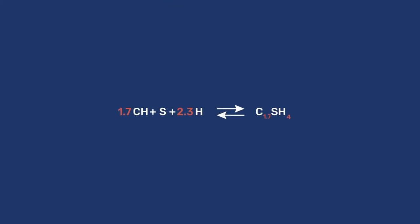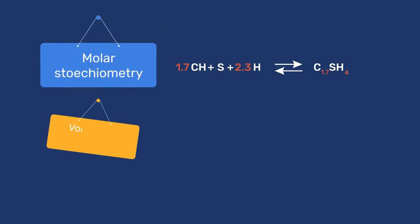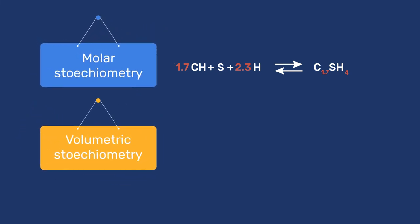To understand the binding capacity of this reaction, let us convert its stoichiometry given in moles to one given in volumes. We then have that one volume of calcium hydroxide plus 0.48 volumes of silica and 0.73 volumes of water react to form 2.03 volumes of calcium silicate hydrate.